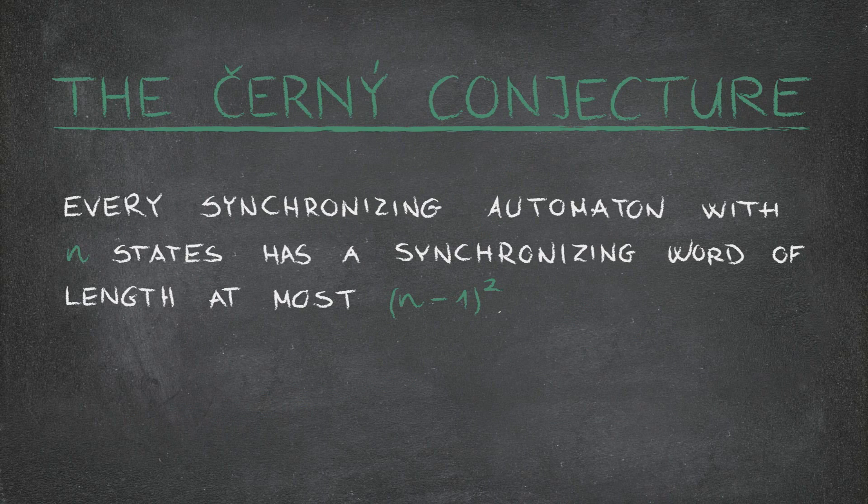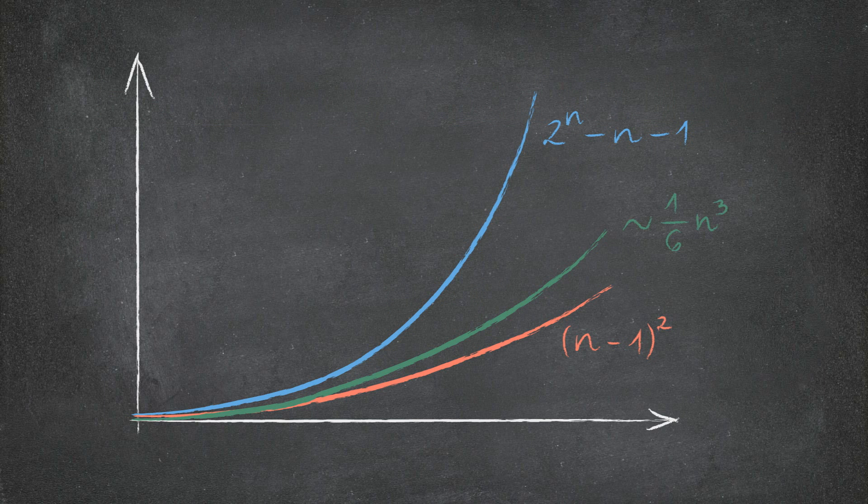This is now known as the Czerny conjecture, and has been an open problem since. It has been confirmed for large classes of automata, but in general, the best proven bound we have is cubic, which is much better than the exponential bound, but far from the quadratic function of n minus 1 squared. We know that the bound cannot be lower than n minus 1 squared because there are examples of synchronizing automata where the length of the shortest synchronizing word is that.